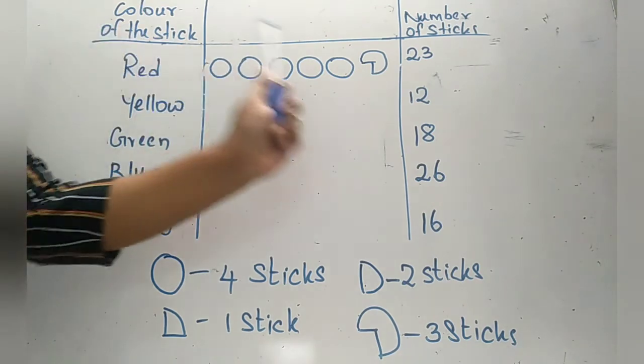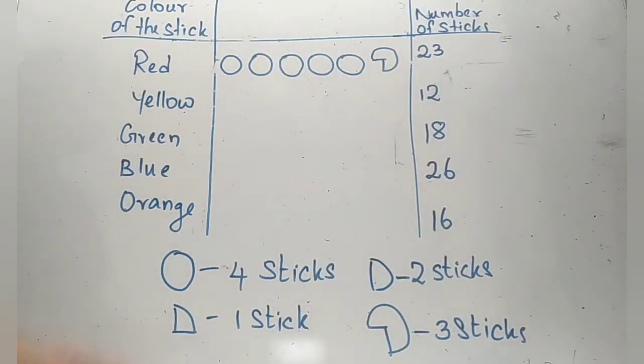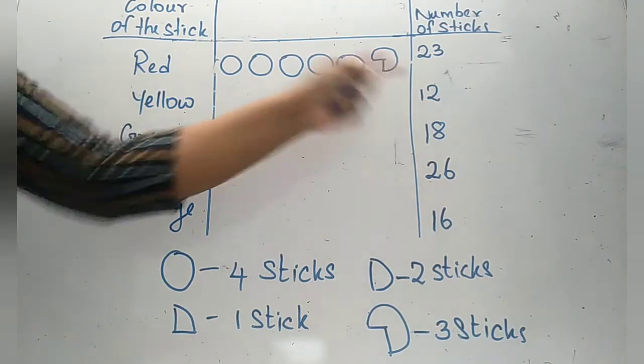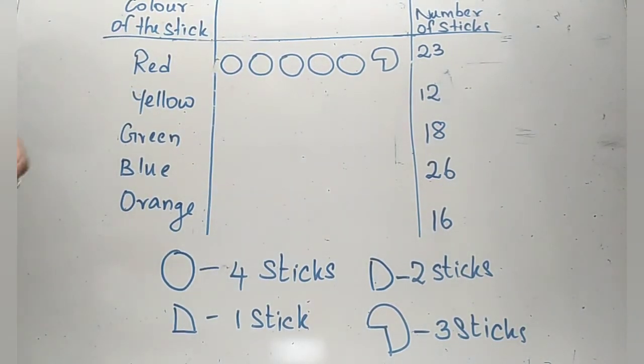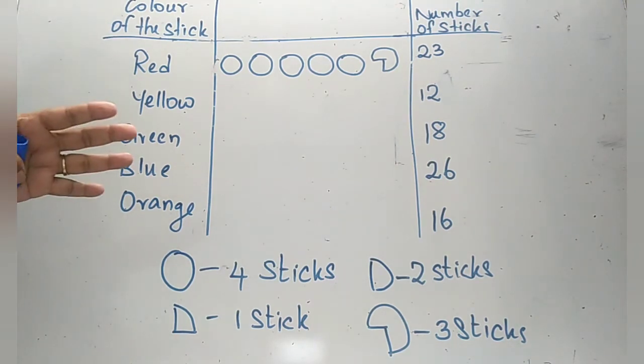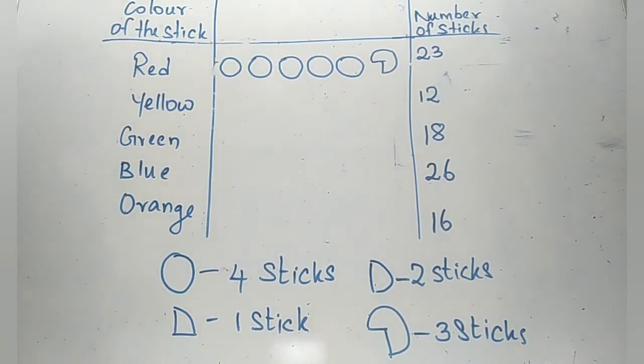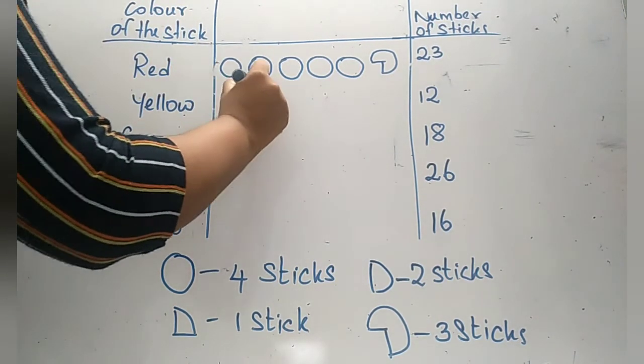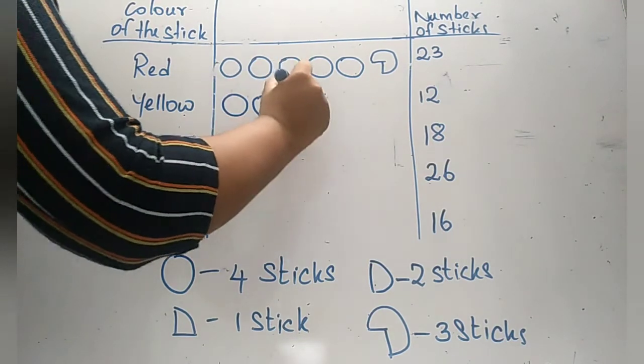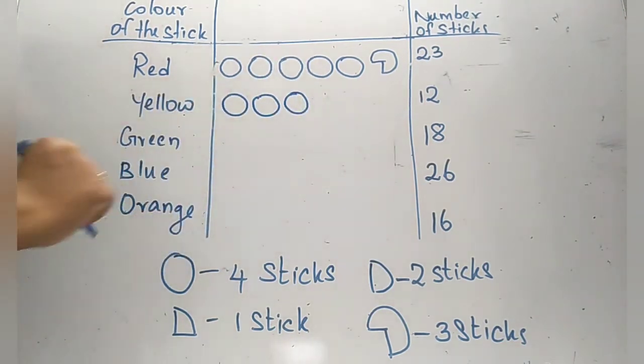Let's look at the next number. Next number is twelve. Twelve is a multiple of four, so you can easily represent that with the circles only. Four times three is twelve, so we need to draw three circles. Four, eight and then twelve.